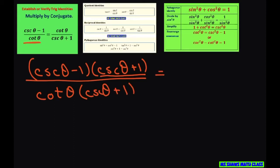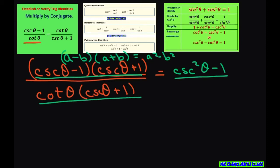Now this equals, this is your a minus b times a plus b form and that gives you a squared minus b squared. So it's going to be cosecant squared minus 1 divided by, and just keep this the same, cotangent theta times cosecant theta plus 1.